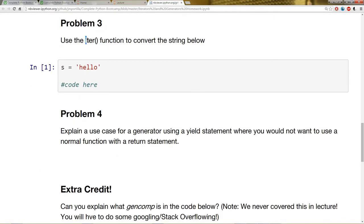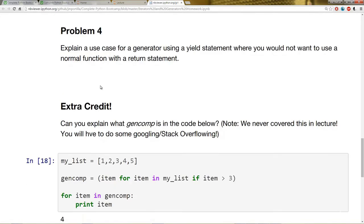Problem three, I want you to use the iter function to convert the string below into an iterator. Problem four, I want you to explain a use case for a generator using a yield statement, where you wouldn't want to use a normal function with a return statement.